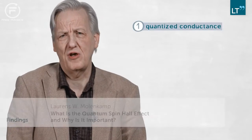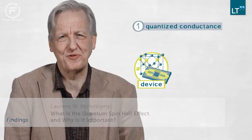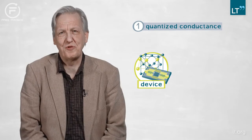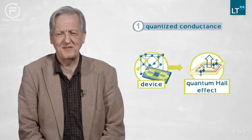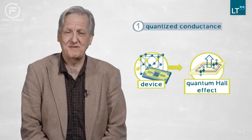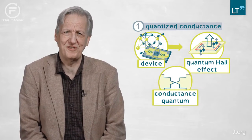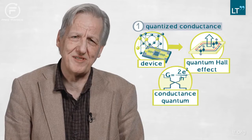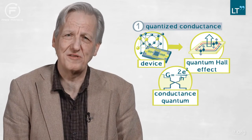The key findings of these first experiments were actually pretty striking: we observed a quantized conductance in the quantum spin-Hall regime. Quantized means quantized in the sense of the quantum Hall effect — there is a conductance quantum, which is the square of the electron charge divided by Planck's constant, and that conductance is exactly what we also observed in our devices.